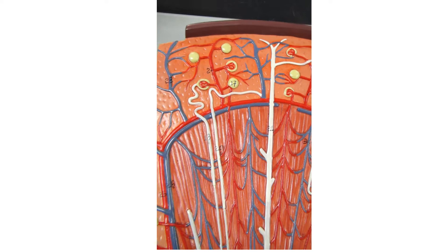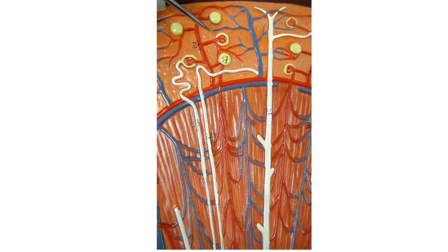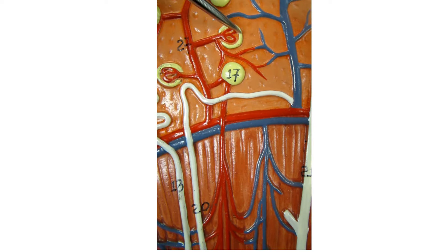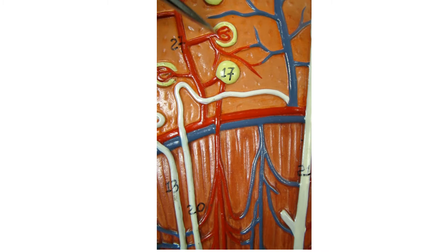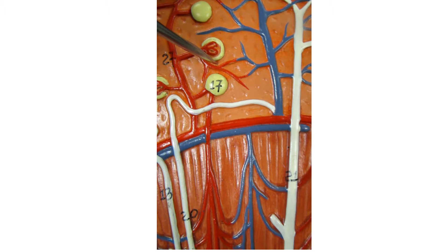If we take a closer look up here in the cortex, you can see we've got quite a bit of renal corpuscles — all these yellow things here. If we take a look at this one, you can see the yellow is representing Bowman's capsule, and the red section in the center is the glomerulus.